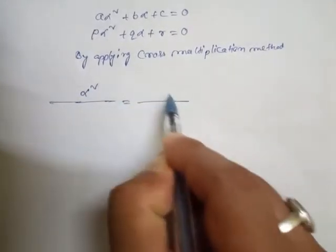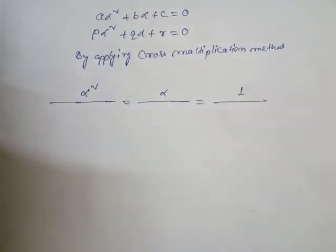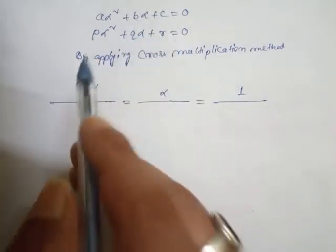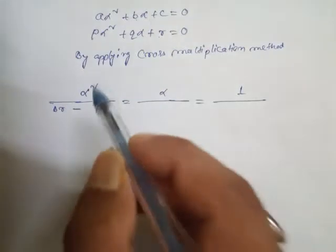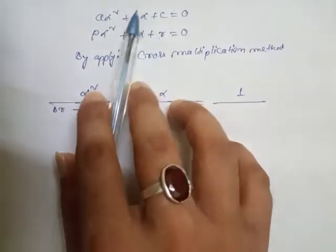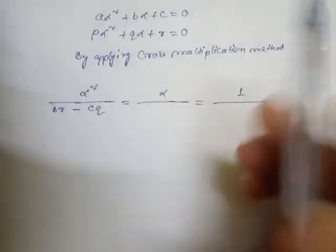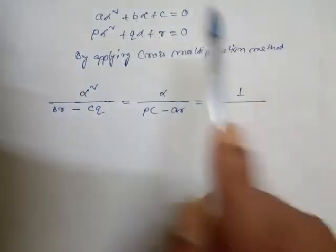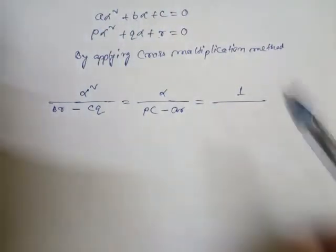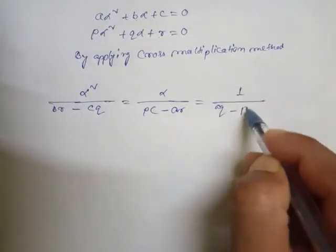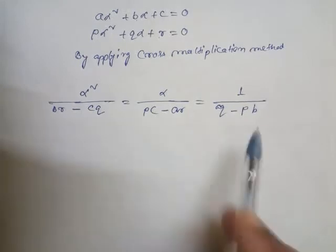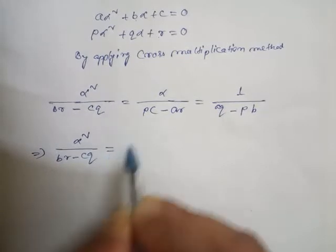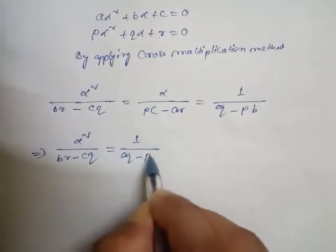For alpha square, we apply cross multiplication to get: br − cq. For alpha, we apply cross multiplication to get: pc − ar. For the constant 1, we apply cross multiplication to get: aq − pb. So: alpha² / (br − cq) = alpha / (pc − ar) = 1 / (aq − pb).